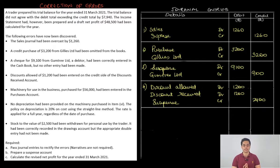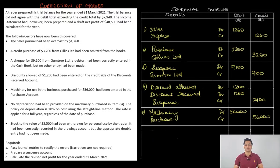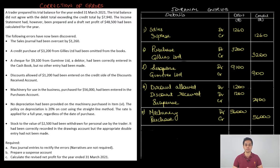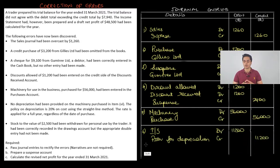Next, machinery was purchased for 56,000 but entered in the purchases account. This is an error of principle — capital expenditure treated as revenue expenditure. To correct it, we debit machinery and credit purchases: Machinery Dr 56,000, Purchases Cr 56,000. The question also wants us to charge depreciation on this asset at 20% straight-line method. Depreciation = 20% of 56,000 = 11,200. The journal entry for depreciation is Income Statement Dr, Provision for Depreciation Cr 11,200.